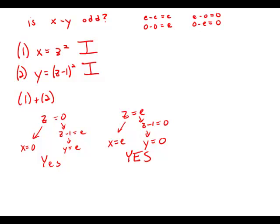So whether z is even or odd, it will lead to values of x and y that give a yes answer to the question. Combined, we can give a resounding yes answer. Combined, the statements are sufficient, and the answer to the entire question is C.